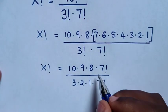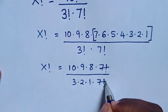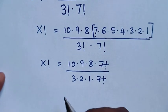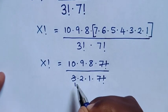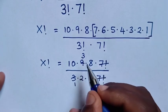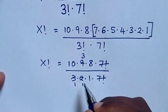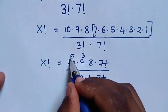To simplify this, 7 factorial will cancel with this 7 factorial. Also, 3 divided by 3 is 1, 9 divided by 3 is 3, and this 2 divided by 2 is 1, 10 divided by 2 is 5.